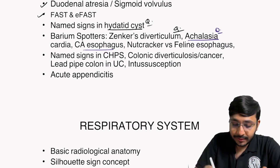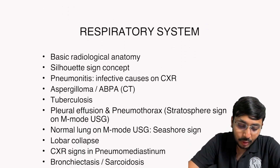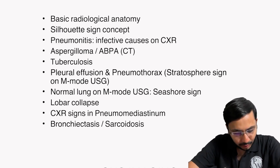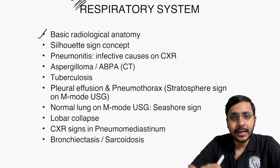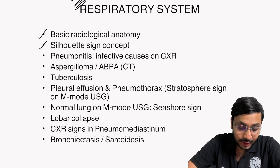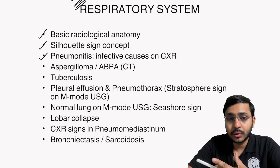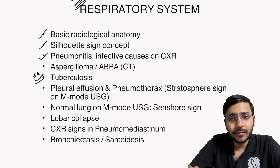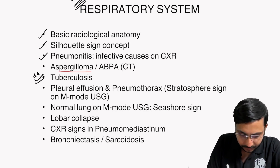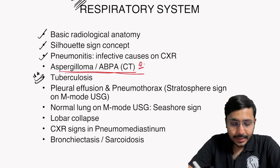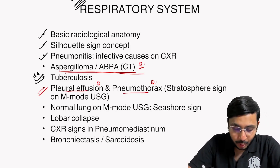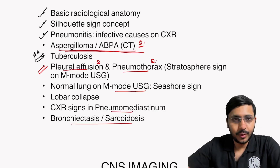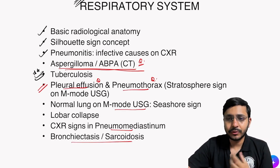Named signs in IHPS, colonic diverticulosis, lead pipe colon in ulcerative colitis — questions have been recently asked. For the respiratory system: most questions come with clinical integration. Revise basic radiology anatomy, rib X-rays, rib fractures, cardiomediastinal evaluation, silhouette sign concept, pneumonitis, types of pneumonia and their causes, lobar pneumonia causes, community-acquired pneumonia causes, lung abscess causes. TB is an exam favorite — India is an epicenter of TB, you can't miss it. Aspergilloma has lots of questions. Pleural effusion and pneumothorax are also exam favorites, plus seashore sign versus stratosphere sign on M-mode ultrasound, sarcoidosis.